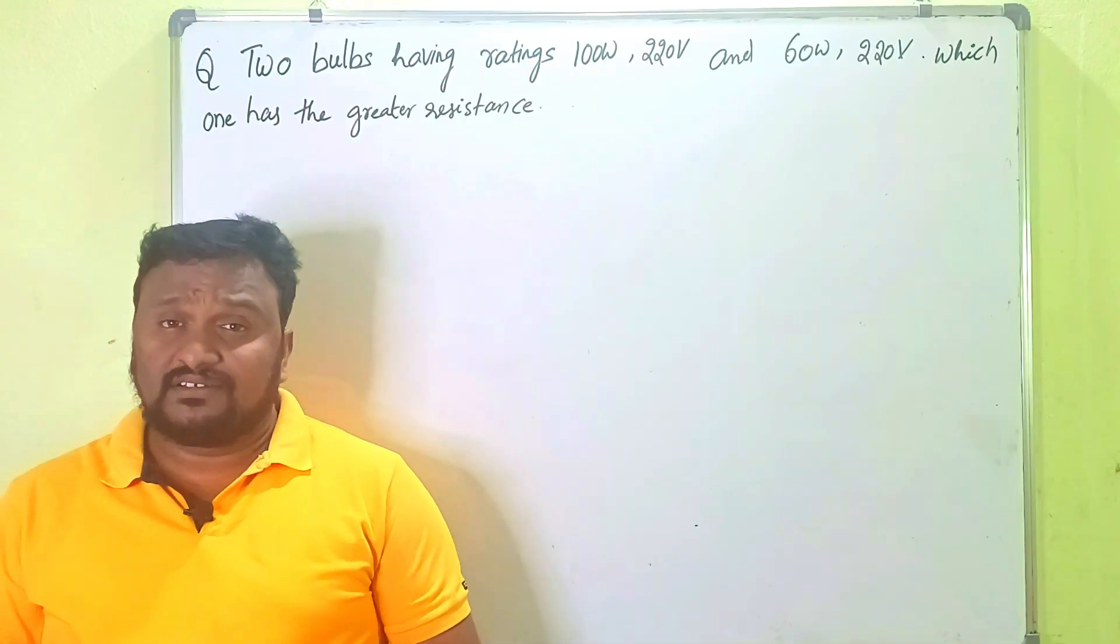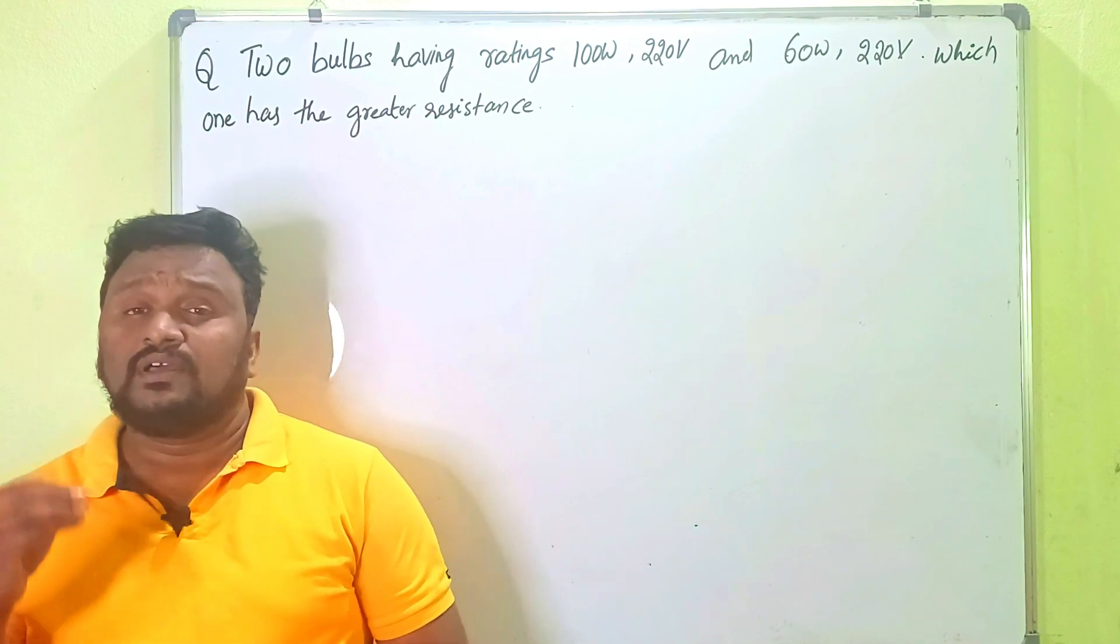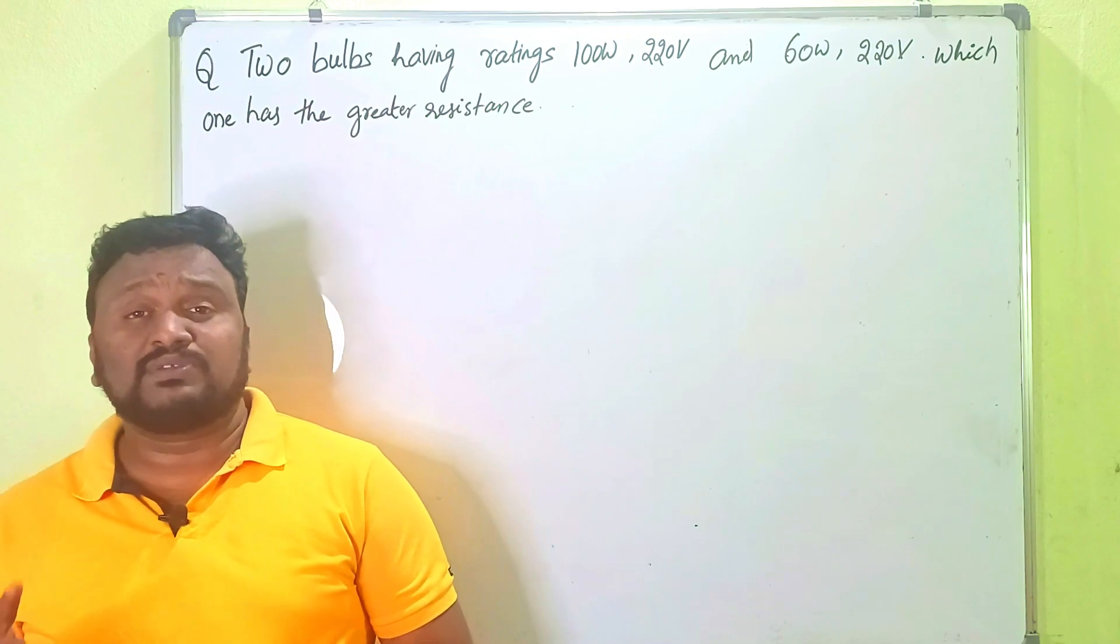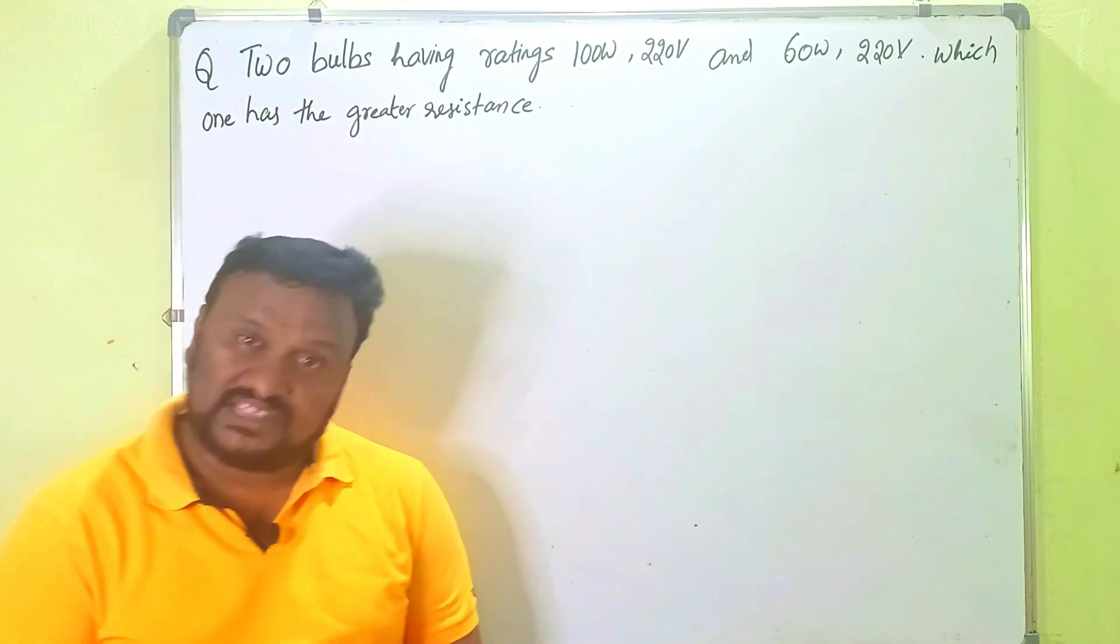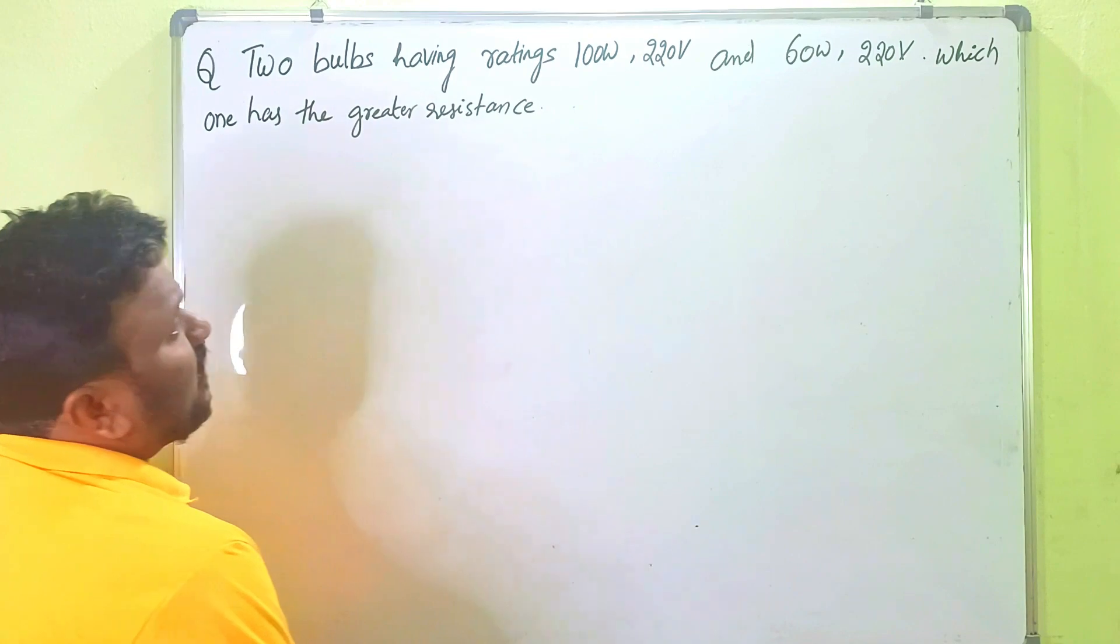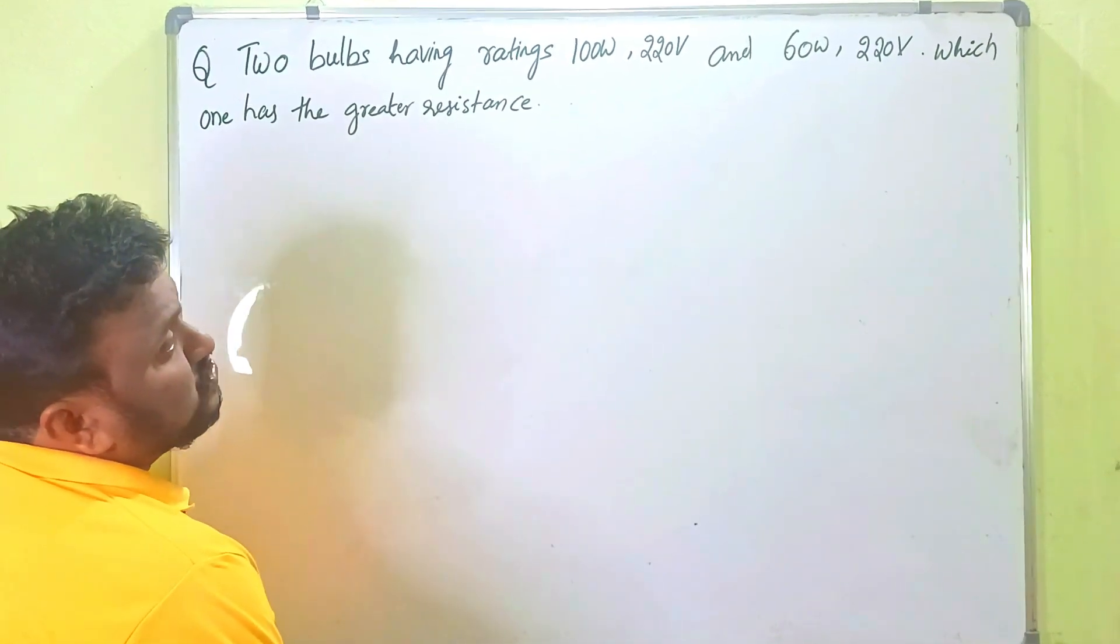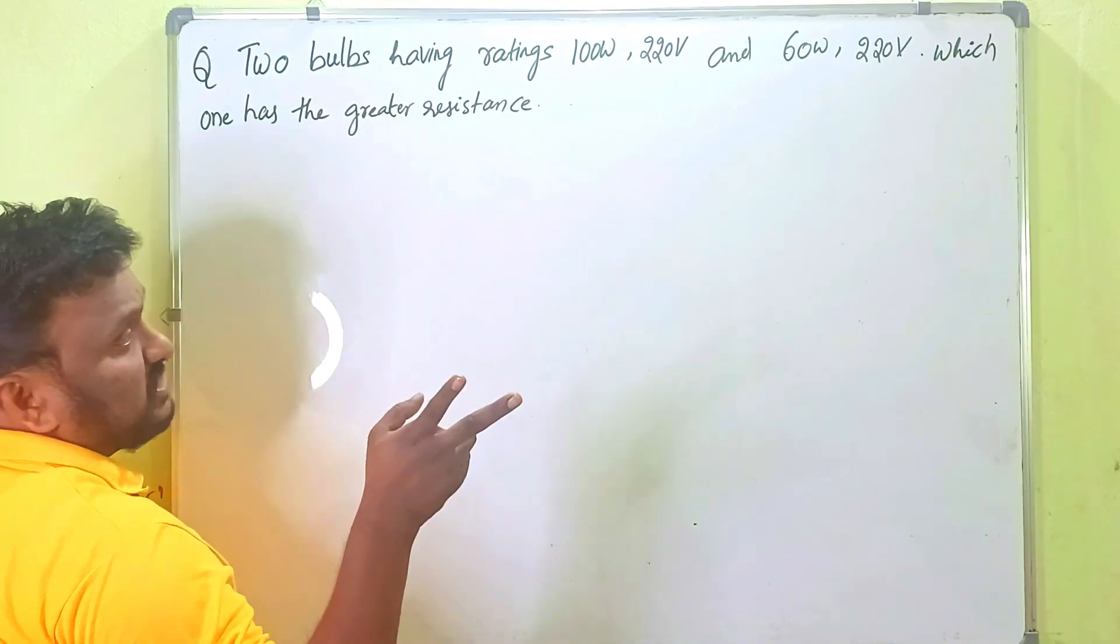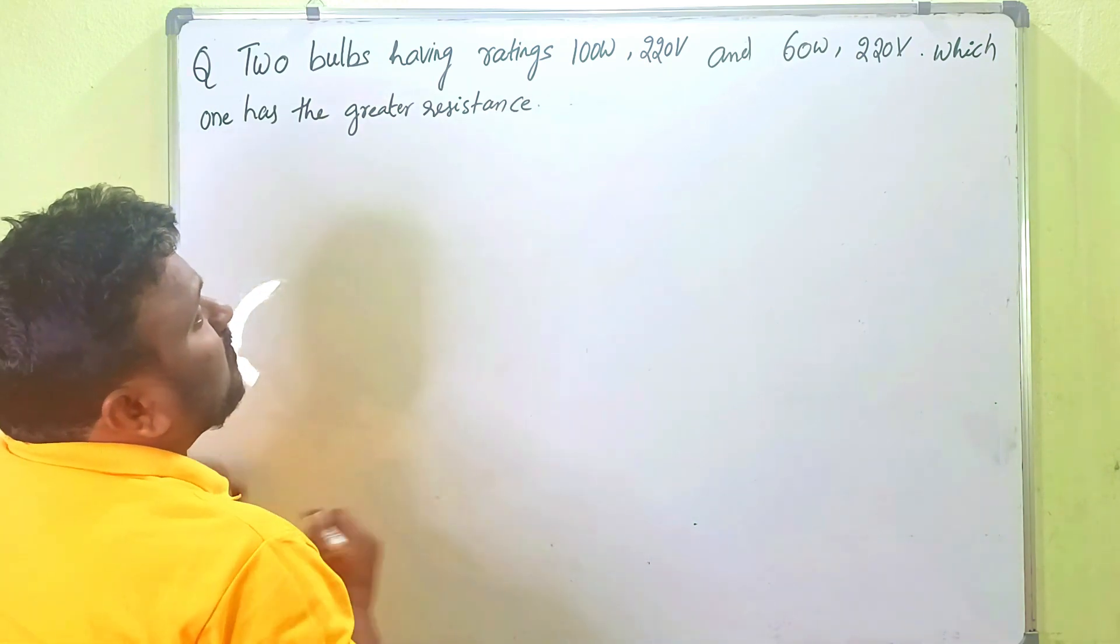In the chapter of electric current, some problems are given that are very important for public examination. Among those problems, I am going to explain one in this video. You have to watch carefully up to last without any skip. The problem should be like this: two bulbs having ratings 100 watts and 220 volts and 60 watts 220 volts, which one has the greater resistance? Two bulbs are there. Their rating means what? Nothing but power here. What means what? Power.